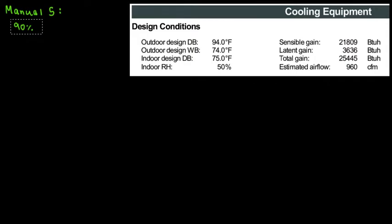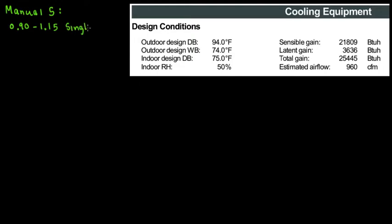We're going to do this as the Manual S states. They are indicating capacity factors, or oversizing factors, however you want to name it. The capacity factors are 0.92 to 1.15. You can either write this in percentage or in decimal. That's going to be for single speed compressor.